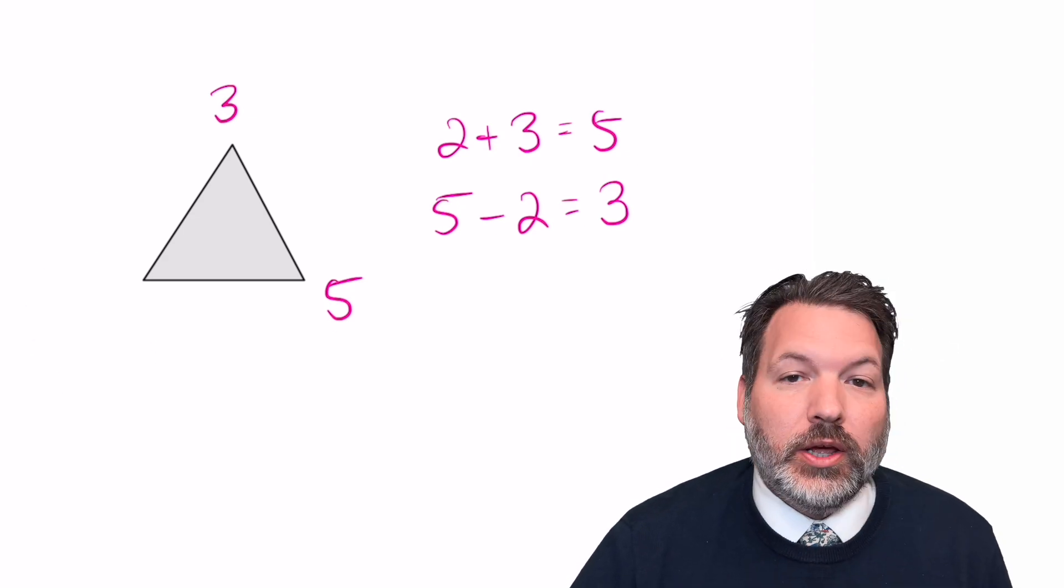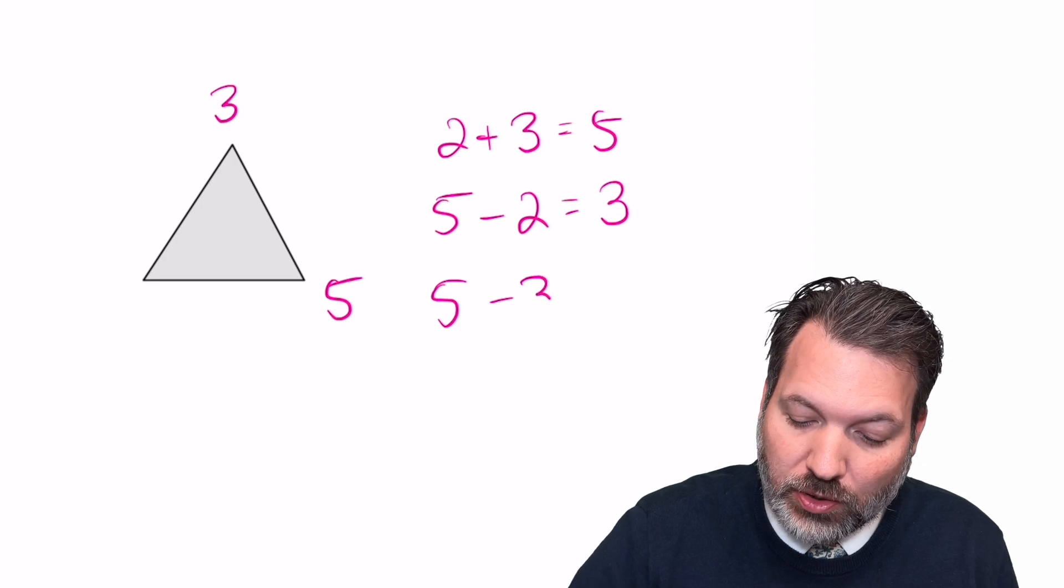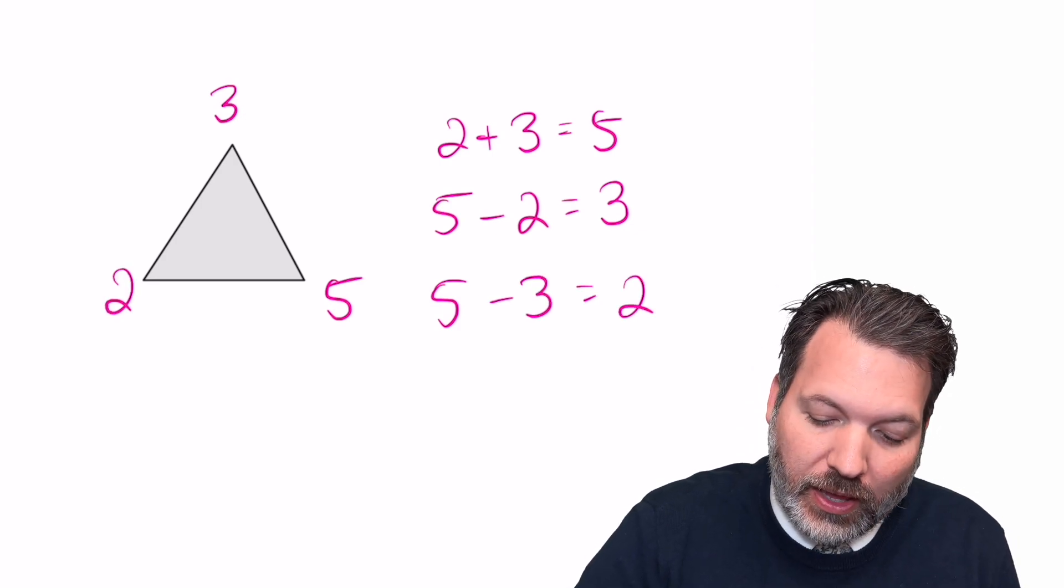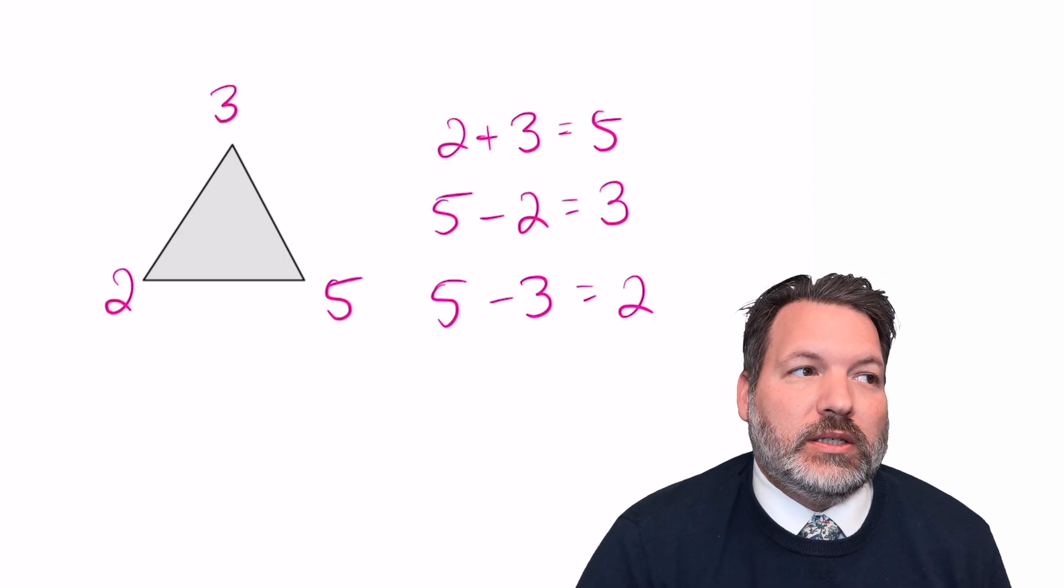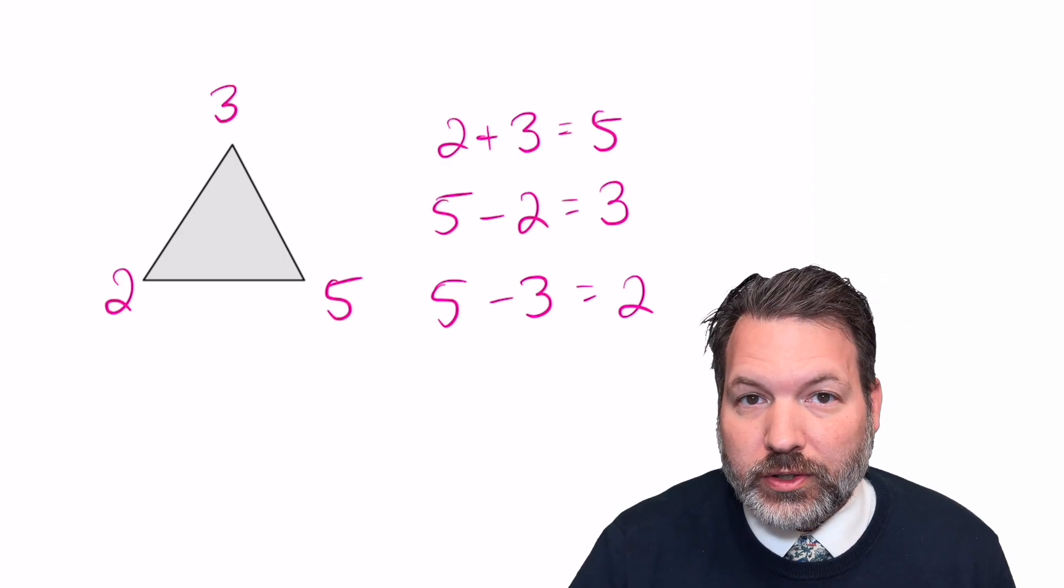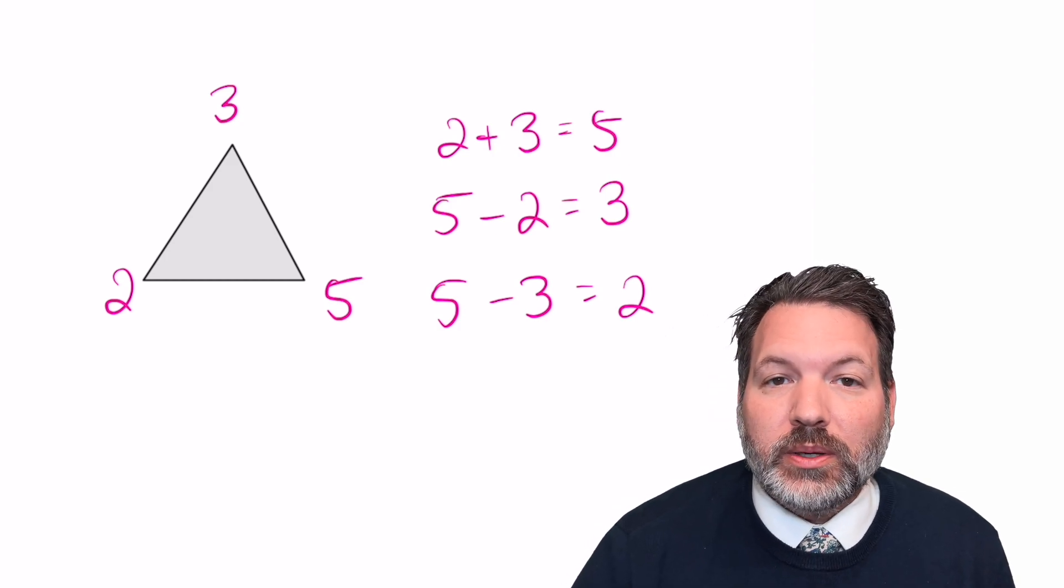Similarly, if we didn't know this bottom left corner of the triangle, we could say that 5 minus 3 is equal to 2, and in that way we could recover that other corner. It's in this sense that we mean addition and subtraction are inverses of each other. Whatever we do in addition, we can undo with subtraction.